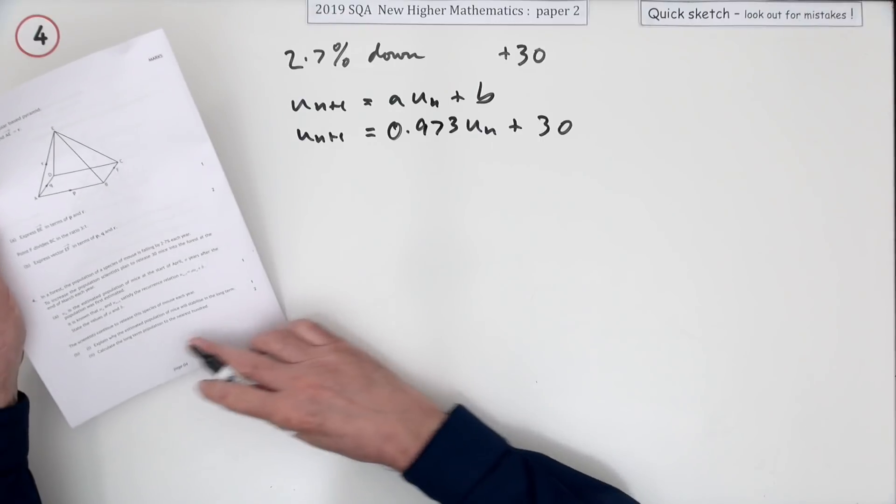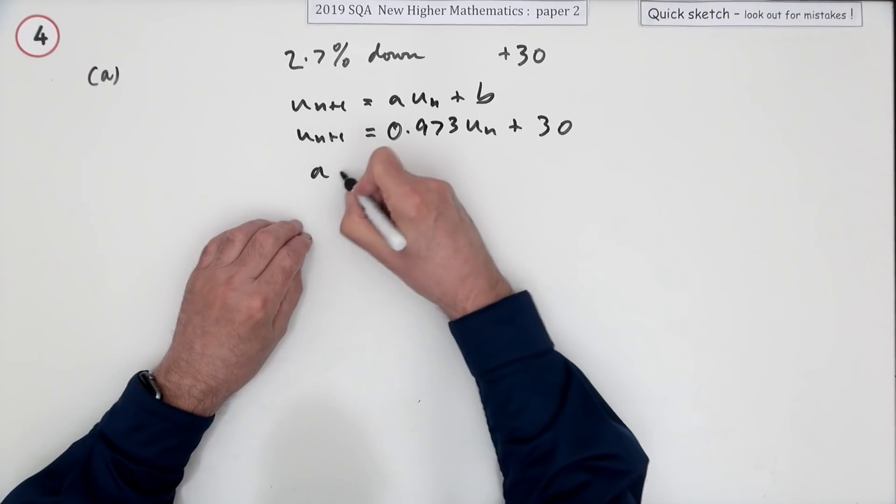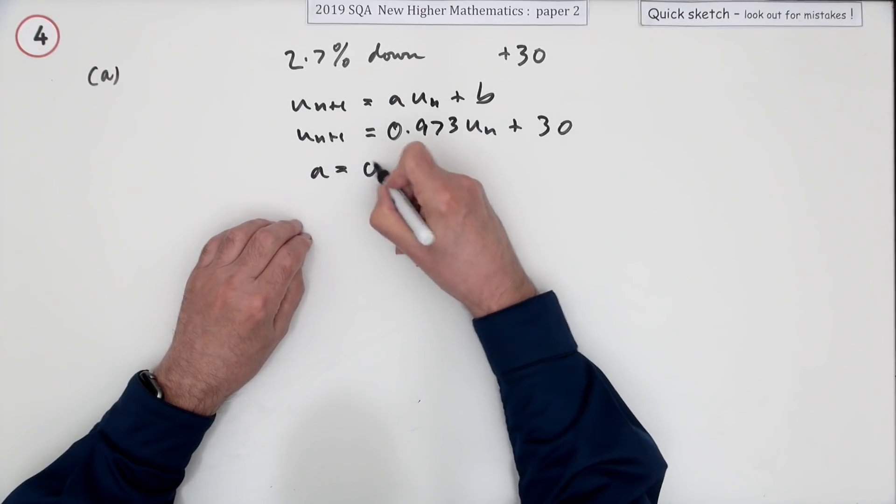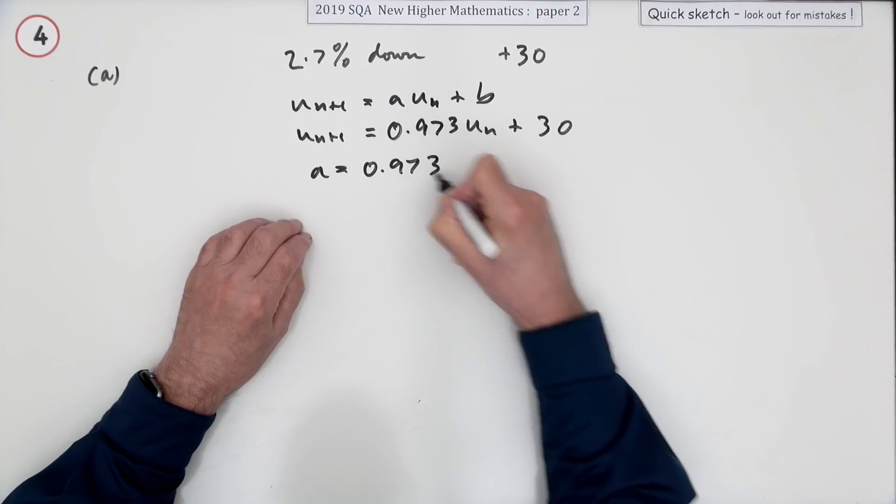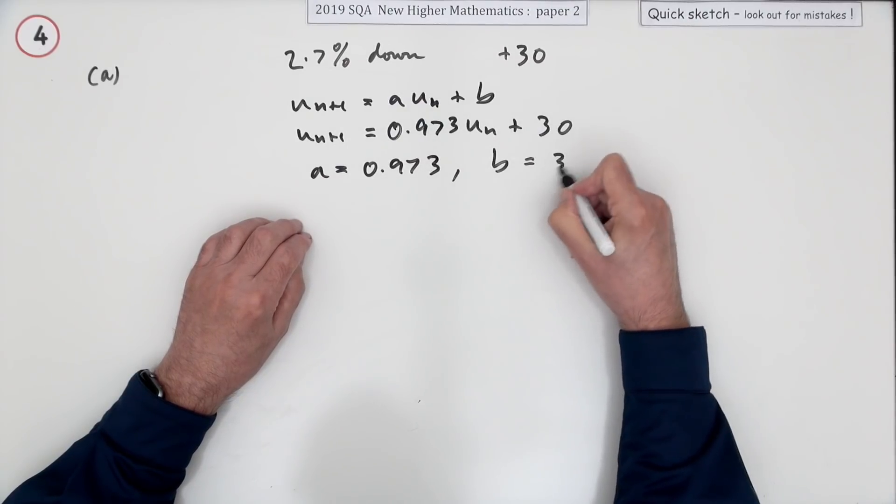State the values of a and B, so that's what you should really just have written. So a is 0.973 and B is equal to 30.